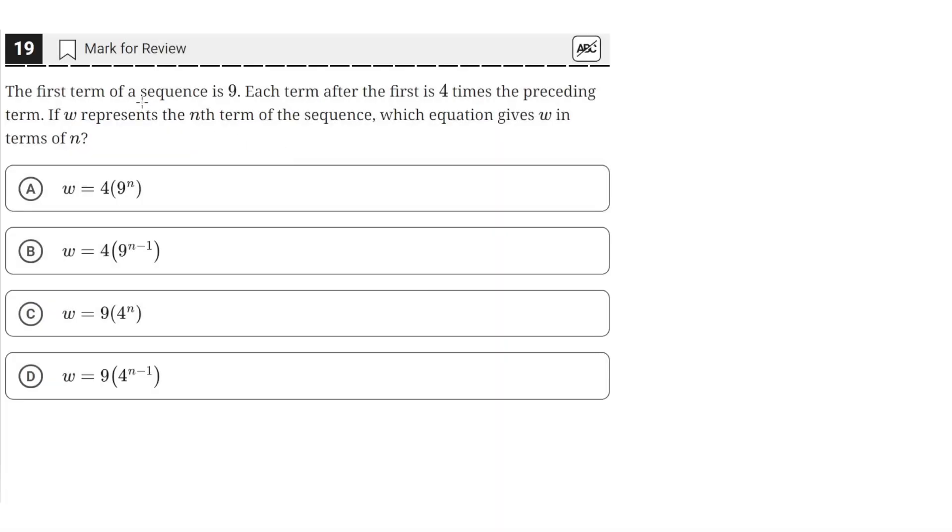The first term of a sequence is nine. Each term after the first is four times the preceding term. If w represents the nth term of the sequence, which equation gives w in terms of n?